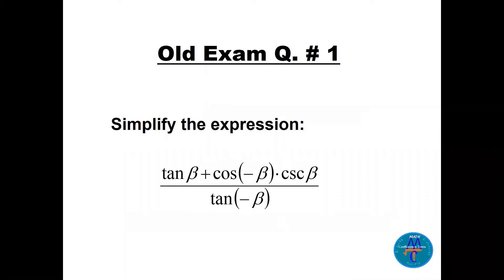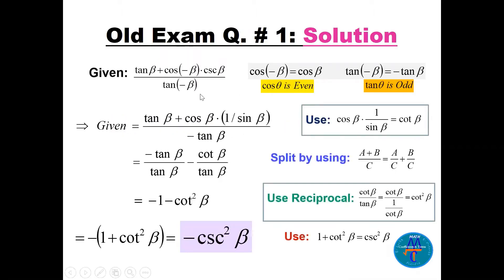Question number one: simplify the expression tan(β) + cos(-β) · csc(β) divided by tan(-β). Anytime you have a negative angle in any of the trigonometric functions you can use even and odd. Cosine of minus beta equals cosine of beta because cosine is even, and tan of minus beta equals minus tan(β) because tan is odd.